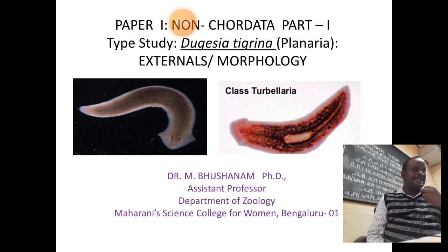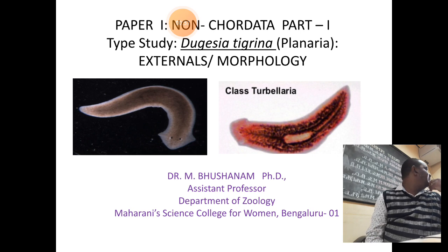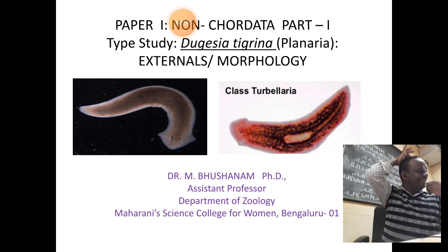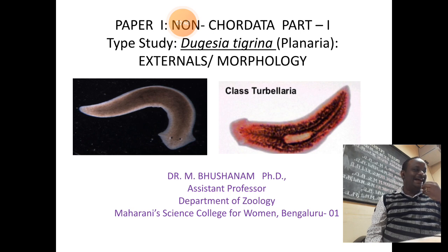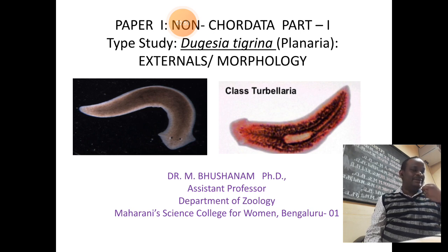The type study generally refers to the study of an animal that includes classification, habits, habitats, physiology, anatomy, embryology, and evolutionary genetics. In this regard, we need to concentrate on the type study of planaria, technically called as Dugesia, as the example under Platyhelminthes.